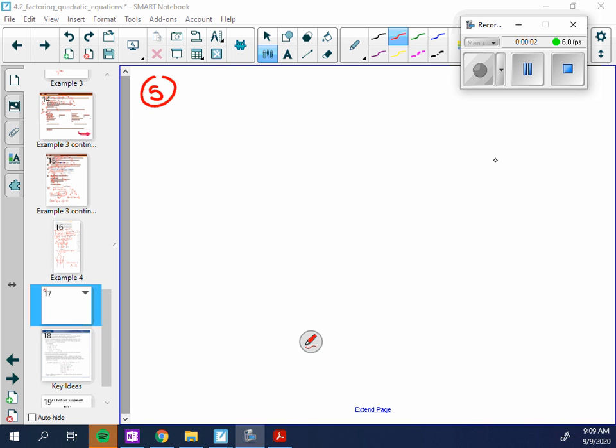Okay, so Example 5, which is in your notes, but I don't have a sheet for it here. It says the length of an outdoor lacrosse field is 10 meters less than twice the width. The area of the field is 6,600 meters squared. Determine the dimensions of an outdoor lacrosse field.